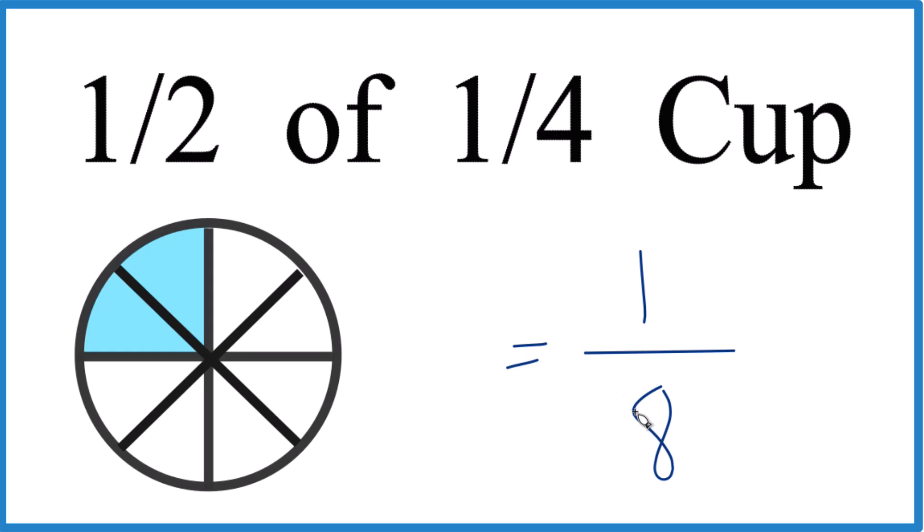Here's the math way to do it. We take one half and we multiply that. So of means multiplication by one fourth. And with multiplying fractions, you multiply the top and then the bottom. One times one is one, two times four is eight. And we get the same answer.